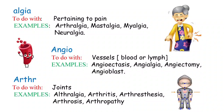Common examples of 'algia' include arthralgia — joint pain; mastalgia — breast pain; myalgia — muscle pain; and neuralgia — nerve pain. Here the prefix changes the entire meaning of the word.